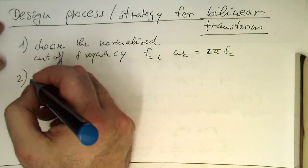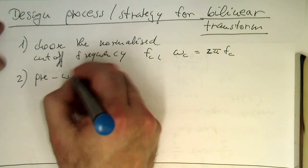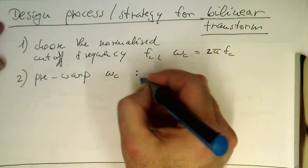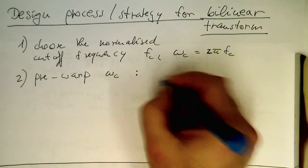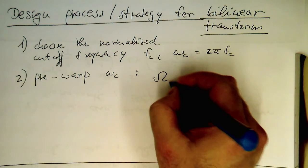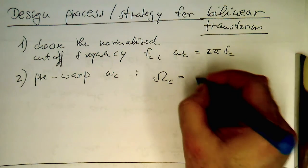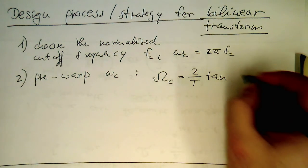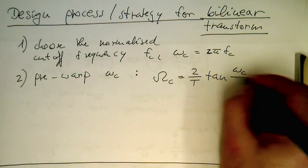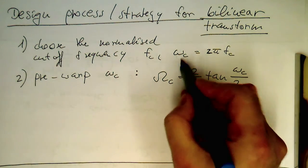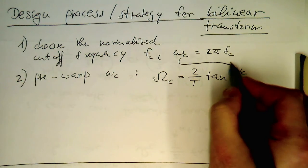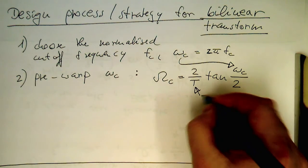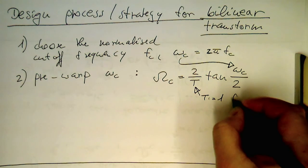Then step two is pre-warp omega c, and this is done by our formula here that we're turning this into an analog omega. So omega c equals 2 divided by t, and then tangent omega c divided by 2. So this omega c goes in here, and usually the t is set to 1 for convenience.